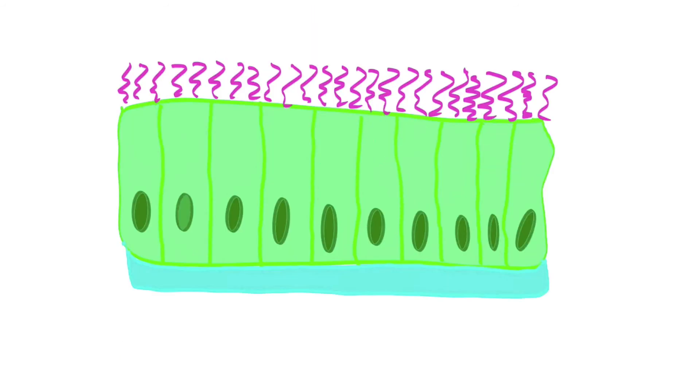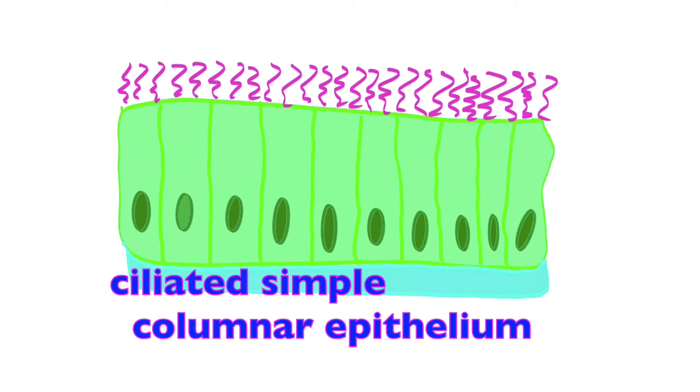This is the type of tissue that lines the uterine tube. This is what's known as simple columnar epithelial tissue, specifically ciliated simple columnar epithelial tissue. These pink wiggly lines represent cilia, which have a multi-function—that is to say, they help propel substances from one direction to another. In this case, it's going to sweep the egg down the uterine tube into the uterus.